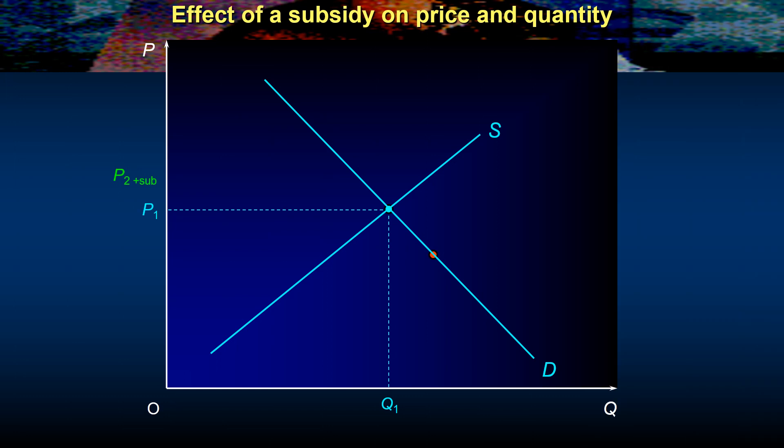So let's have a look at some examples. We're going to have a look here at a market that has a current price of P1 and a quantity being produced, bought and sold of Q1. Let's now introduce a subsidy and we can see here that the subsidy has the effect of shifting the supply curve from S to S plus subsidy.